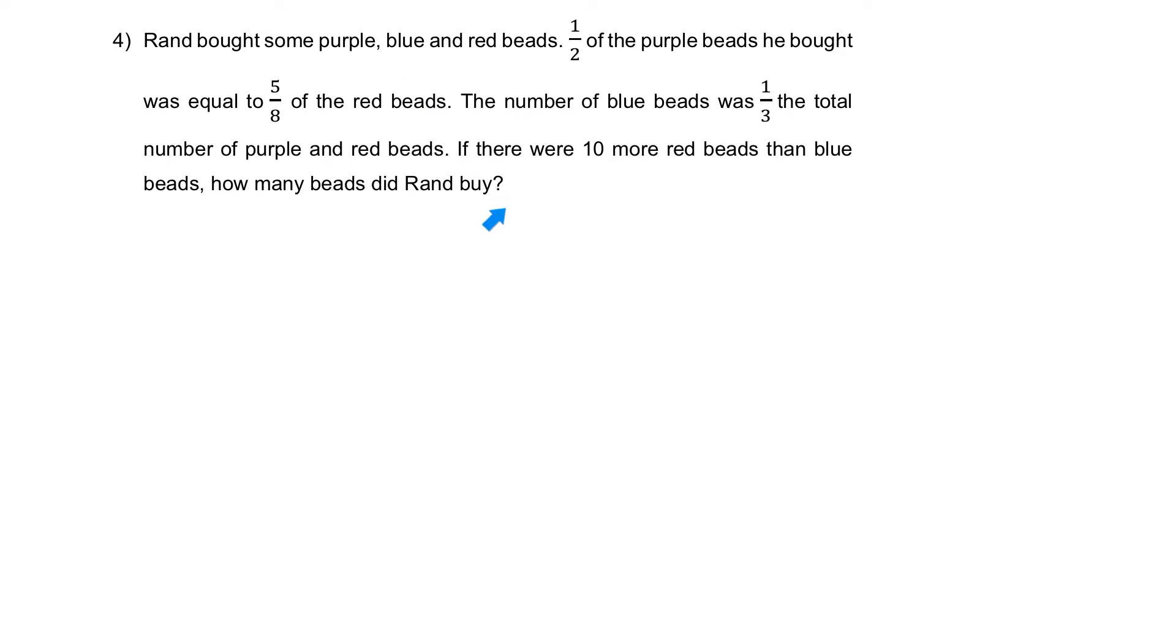Seems like a long question, but it's okay. We're just going to break it down and do it one sentence at a time, one information at a time. So let's start drawing from the front. Ren bought some purple, blue and red, so we're going to have purple, we're going to have the blue, and we're going to have the red. So we're going to draw it one at a time. So don't worry too much about how complicated the question is.